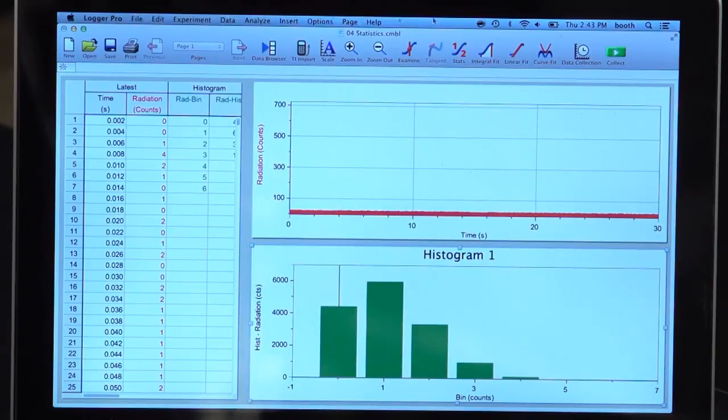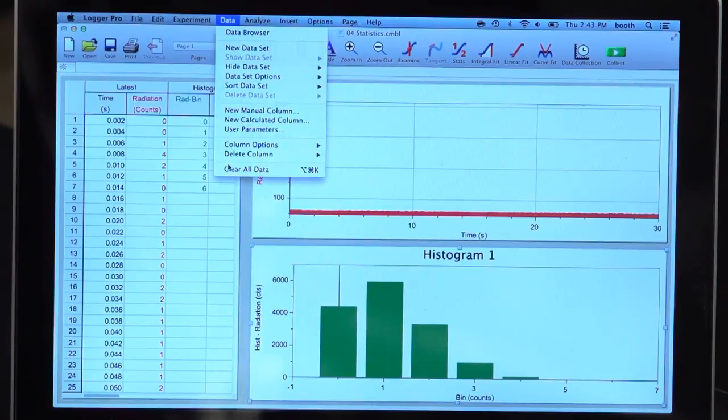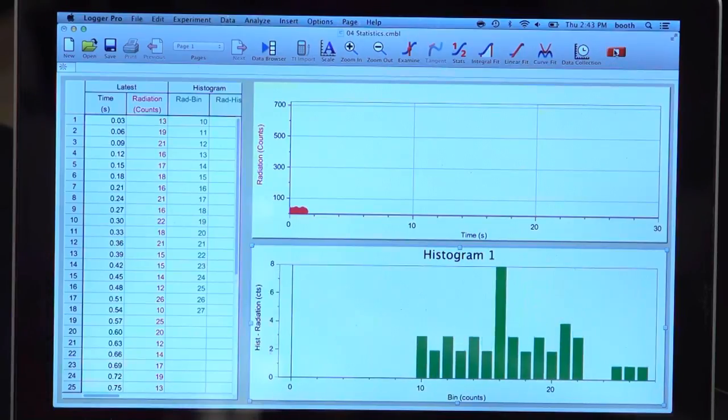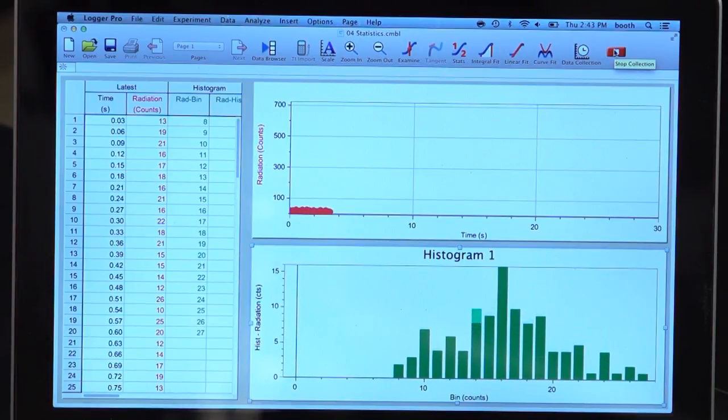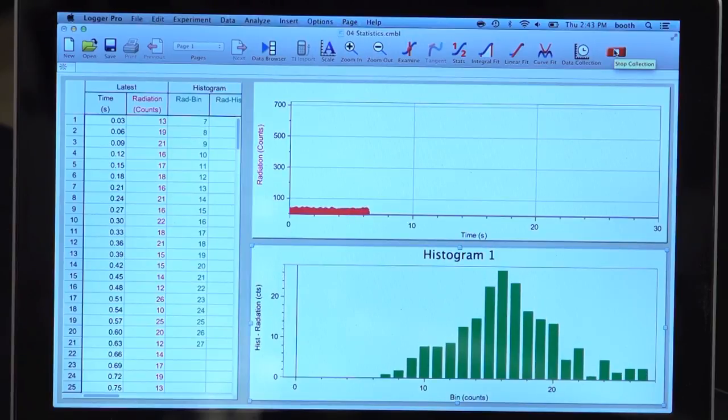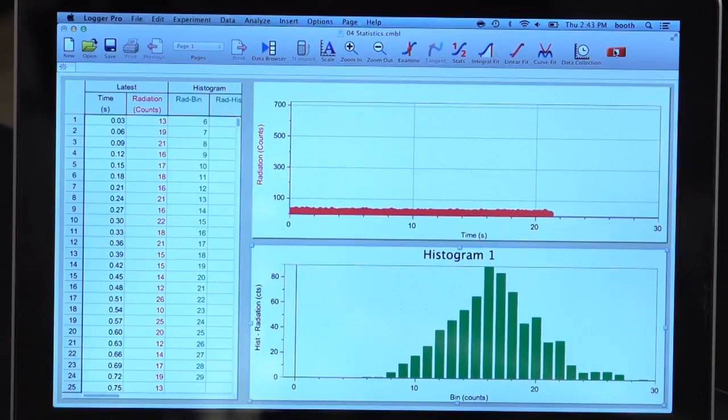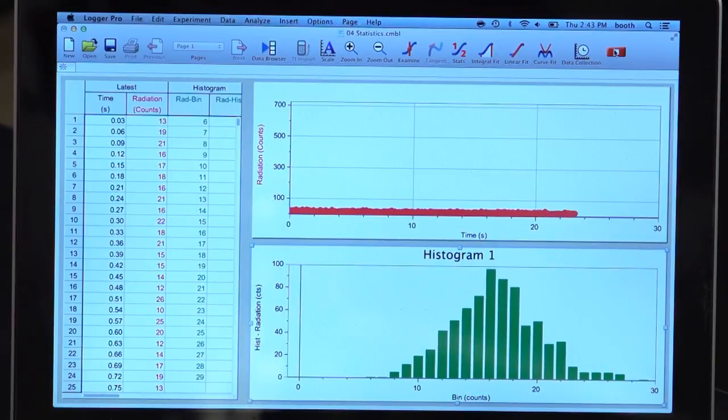And I'm going to clear my old data here and take a fresh run. This time, the average number of counts in a time interval is approximately 16 or 17. And my distribution of counts is symmetric. And the shape of it is very much that of a Gaussian. The longer I take data, the more closely that approximates a Gaussian.